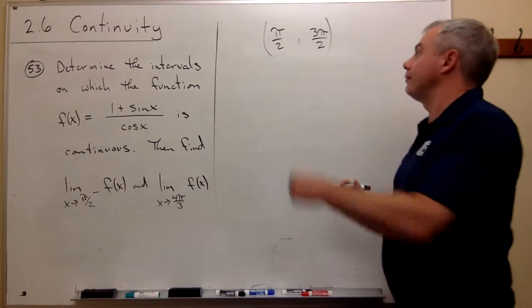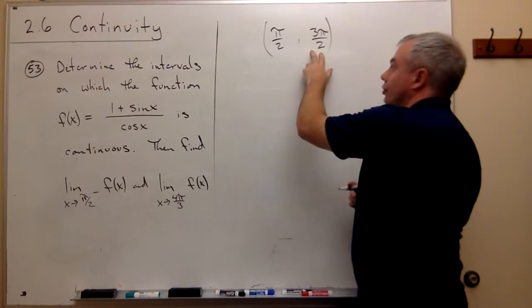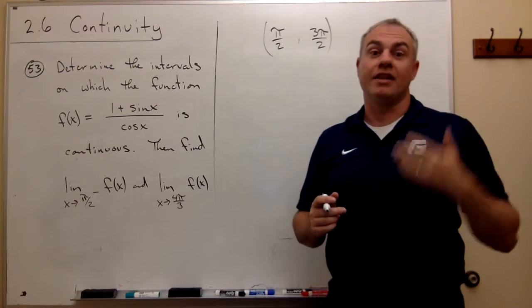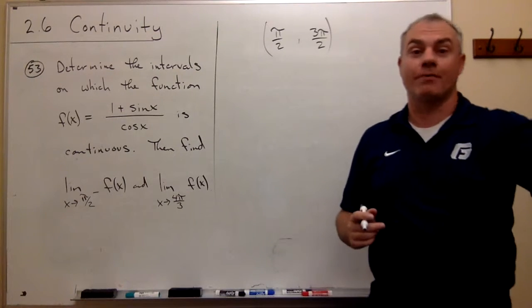But wait, we could move on from there. 3 pi over 2 is no good. But then we're okay again until we get to 5 pi over 2. And then we're okay again until we get to 7 pi over 2.